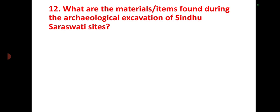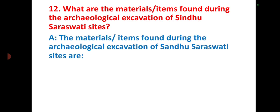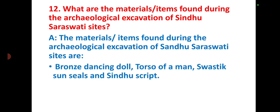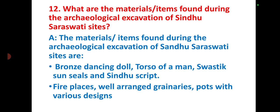What are the materials and items found during the archaeological excavation of Sindhu-Saraswati sites? The materials and items found are: the bronze dancing doll, figurines of men, the swastika symbol, the sun symbol, seals with Sindhu scripts, fire altars, and well-arranged granules and forts with various designs.